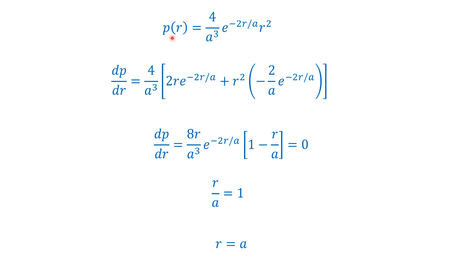To find the maximum probability, we differentiate P(r) with respect to r and set it equal to zero. Since 4/a³ is a constant, we factor it out. Differentiating r² gives 2r, keeping the exponential as is. Then we keep r² and differentiate the exponential, giving minus 2 over a times e to the minus 2r over a. We take 2 as a common factor and r as a common factor from the bracket.